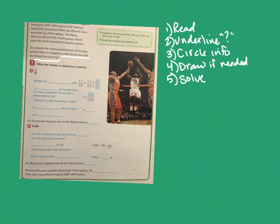For example, if one team has four students and another has five, the team of five has an advantage. To fairly compare, you'd find the percent correct — essentially asking what the average would be if both teams had 100 people. That levels the comparison. Here, we're not sure if the Suns and Heat played the same number of games, so we convert both to percents to get that common basis.